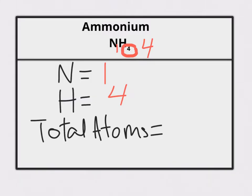All we have to do then is count our total number of atoms, and 1 plus 4 equals 5. That means there's a total of 5 atoms found in the formula for ammonium, which is NH4.